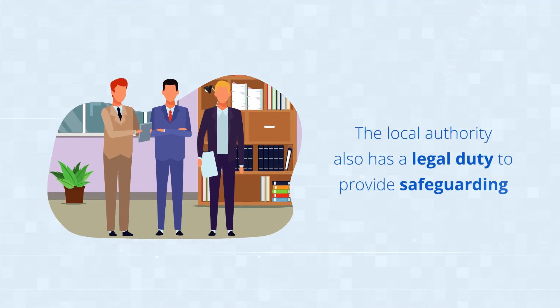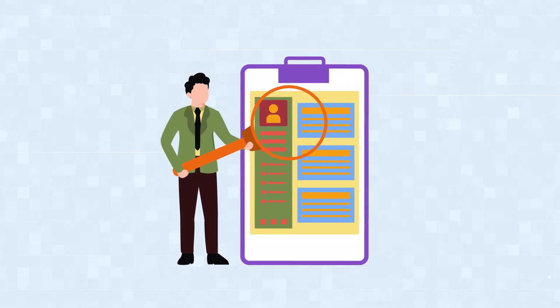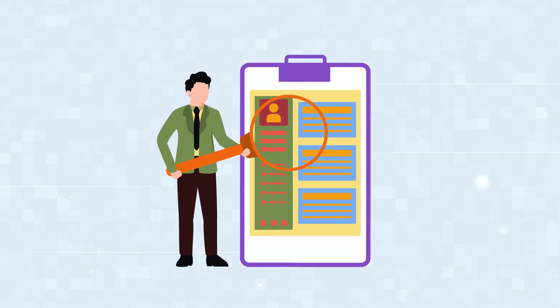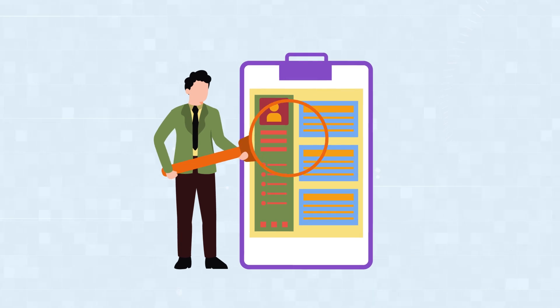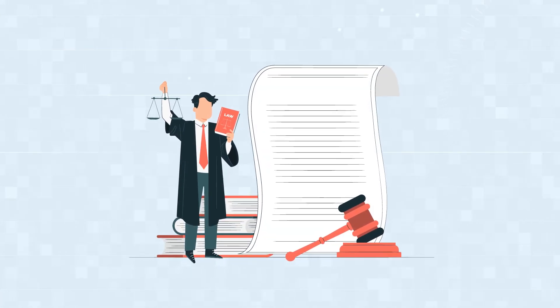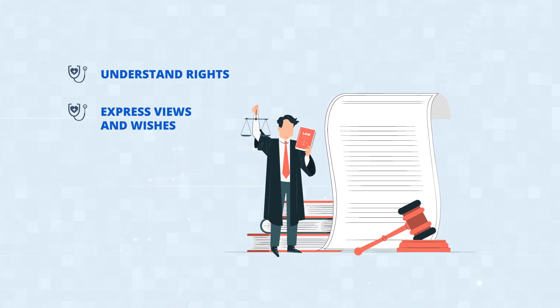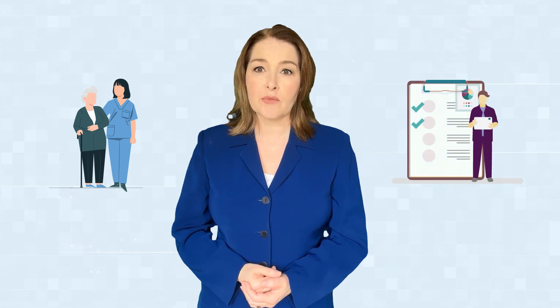The local authority also has a legal duty to provide safeguarding. If they believe someone is at risk, they will make enquiries to decide the appropriate action. If necessary, a local authority must provide an advocate, who ensures that an individual understands their rights and can express their views and wishes. It should also be noted that caregivers have the right to social support, which requires an assessment and a support plan from the local authority.